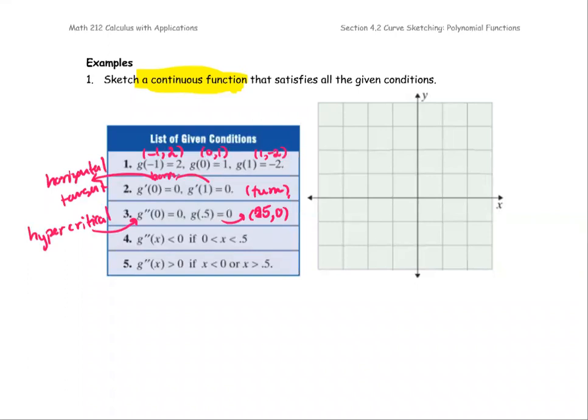And then for the interval from 0 to 0.5, the g double prime is less than 0. Less than 0 for the g double prime means concave down. And this interval, the graph is concave up because we have the positive side. For x less than 0 and x greater than 0.5.